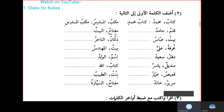Miftahun and Al-Baytu — key and the house. If you combine them, the house key or the key of the house becomes Miftahul Bayti. The next one: Baitun, Abbasun — house and Abbas. If you combine both: Baitu Abbasin — Abbas's house.